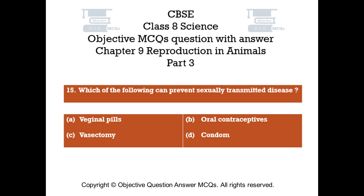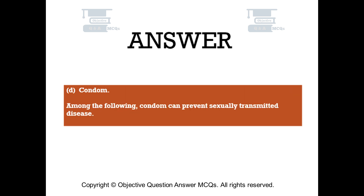Question number 15. Which of the following can prevent sexually transmitted disease? Option A: Vaginal pills. Option B: Oral contraceptives. Option C: Vasectomy. Option D: Condom. The right answer is option D — Condom. Among the following, a condom can prevent sexually transmitted disease.